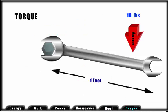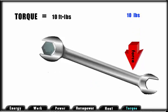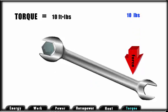Torque is twisting force. It is also measured in foot-pounds. In this illustration, we are producing 10 foot-pounds of torque when we apply 10 pounds of force to a foot-long wrench.